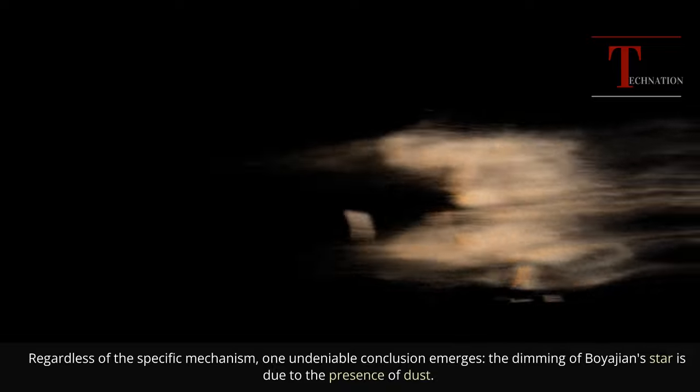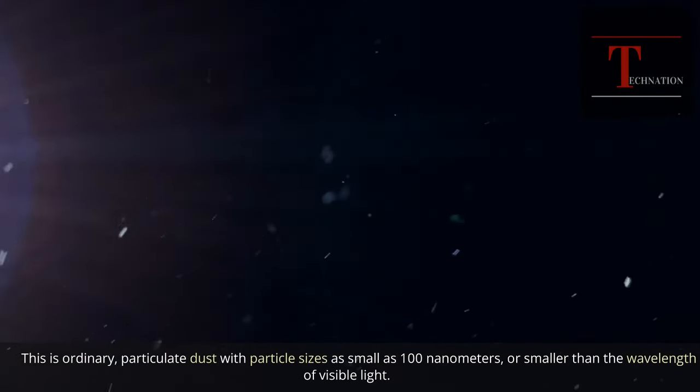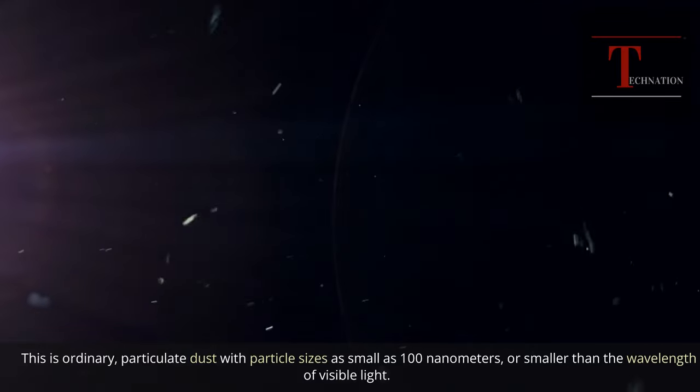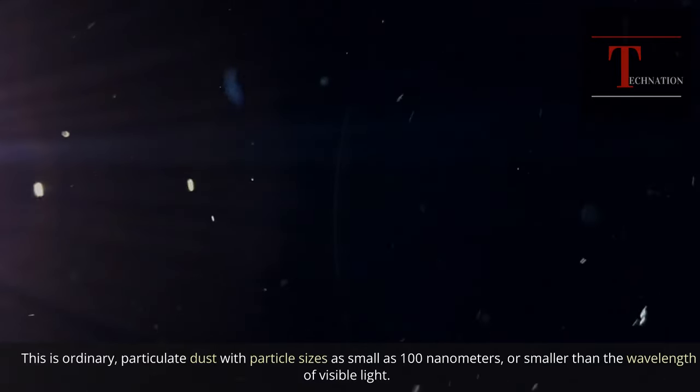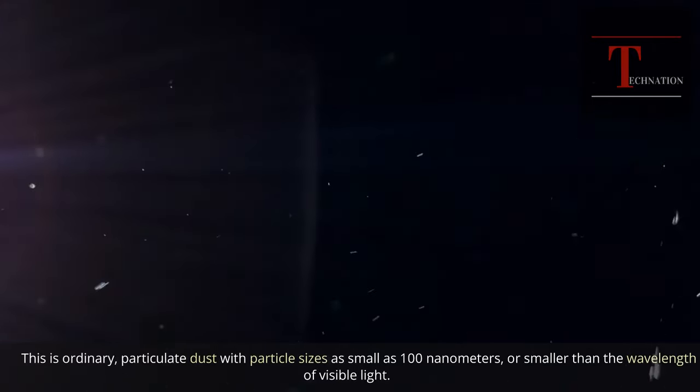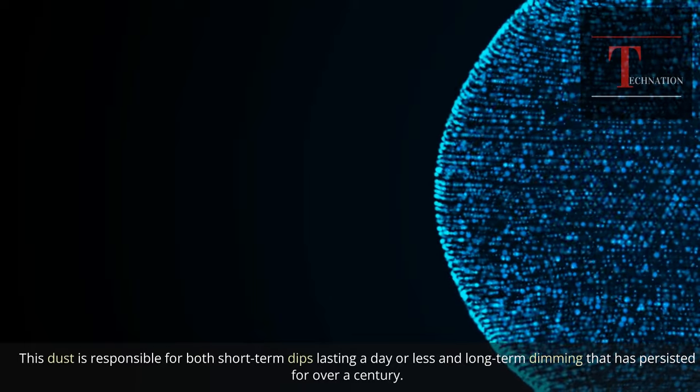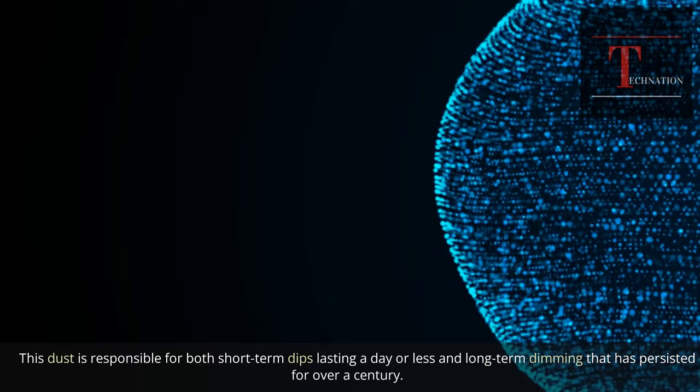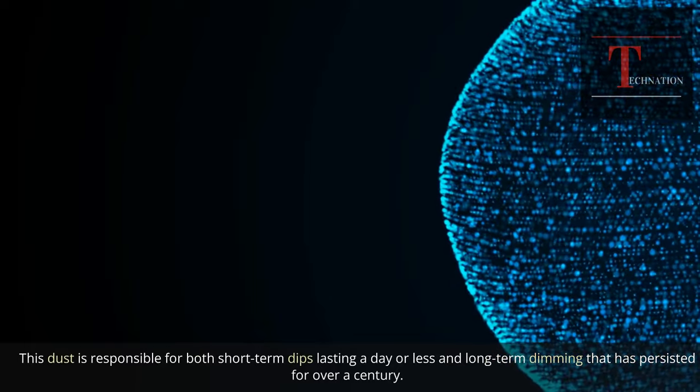Regardless of the specific mechanism, one undeniable conclusion emerges: the dimming of Boyajian star is due to the presence of dust. This is ordinary, particulate dust with particle sizes as small as 100 nanometers, or smaller than the wavelength of visible light. This dust is responsible for both short-term dips lasting a day or less and long-term dimming that has persisted for over a century.